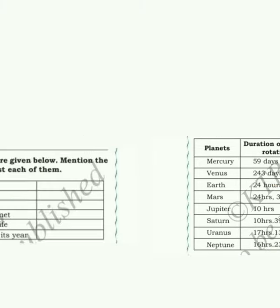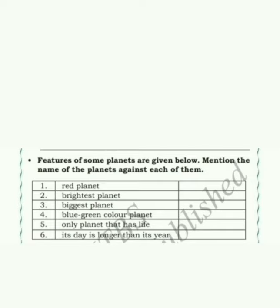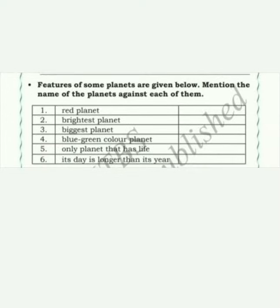Now, there is an activity from your EBS textbook, page number 189. Features of some planets are given — mention the name of the planet against each feature. First one: red planet. Which planet is called the red planet? Mars is called the red planet.